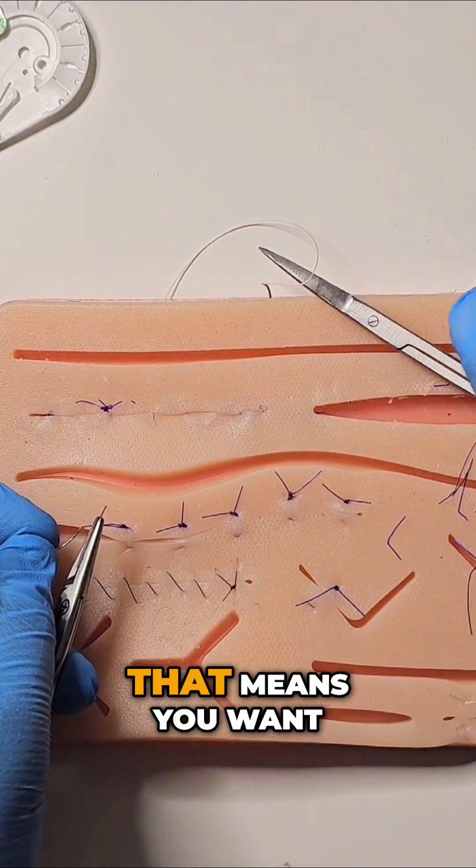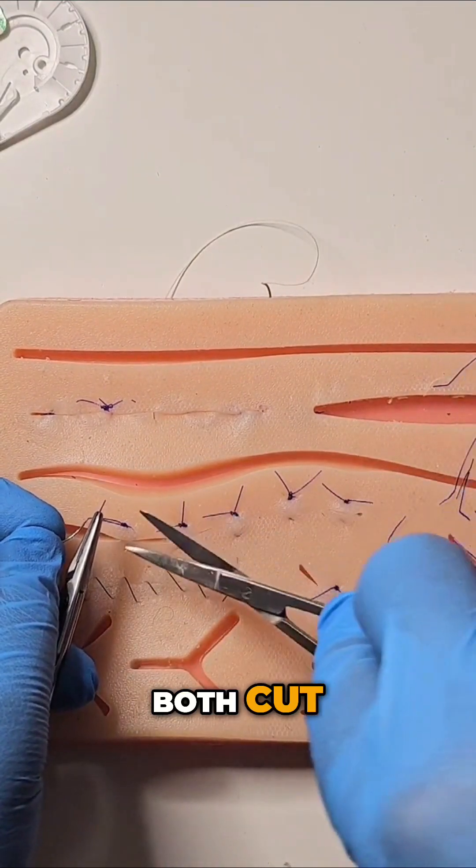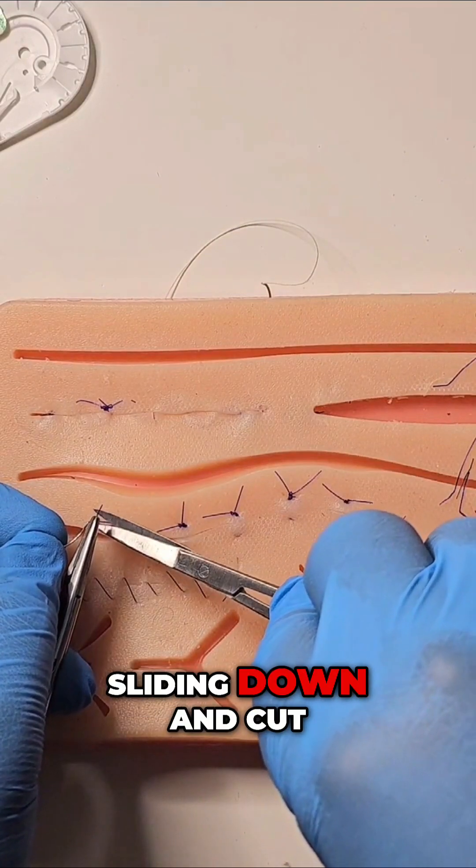You hold up both suture ends, that means you want both cut. So you cut by sliding down and cut.